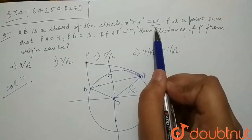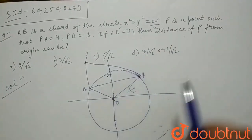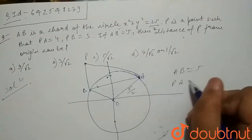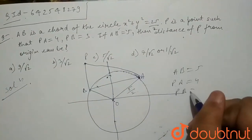This can be determined by the equation of this circle. And AB is given 5, PA is given 4, and PB is given 3.